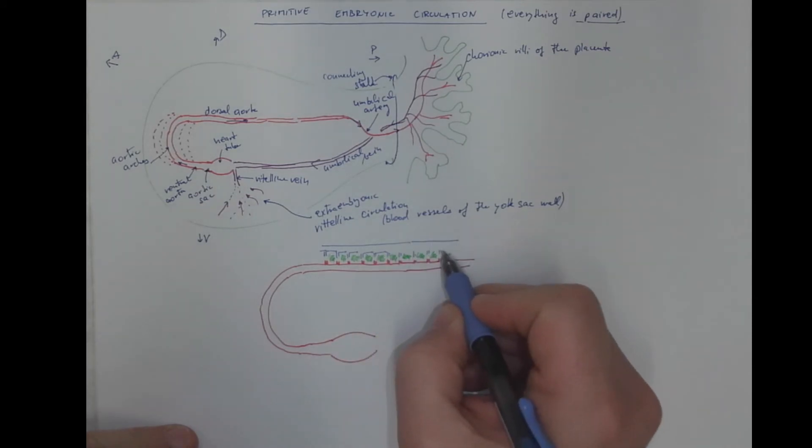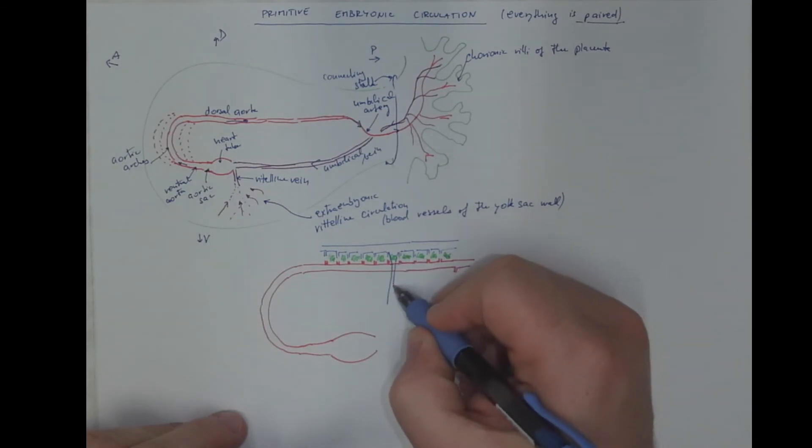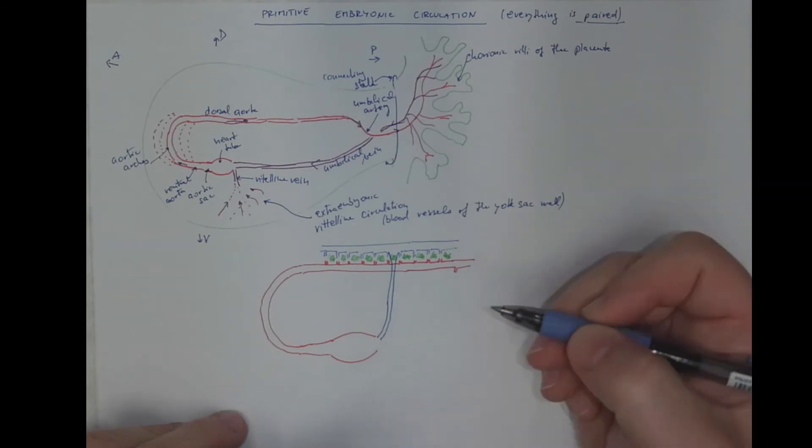And we got the anterior cardinal vein draining the anterior part of the body and the posterior cardinal vein draining the posterior part of the body. Both of which fuse to form the common cardinal vein which is one of the tributaries to the heart.